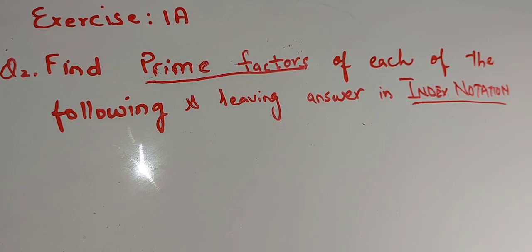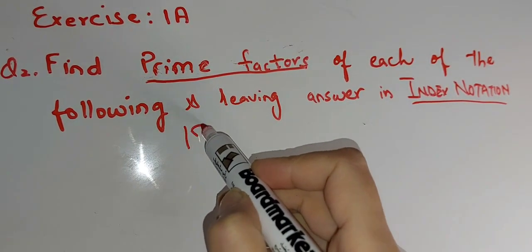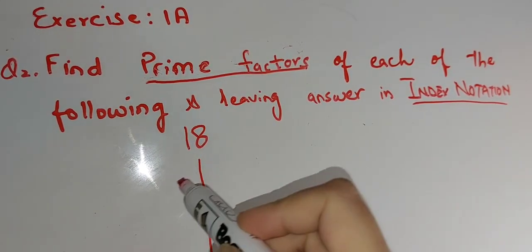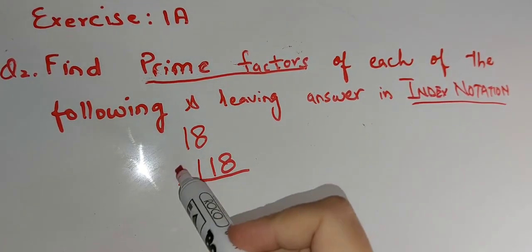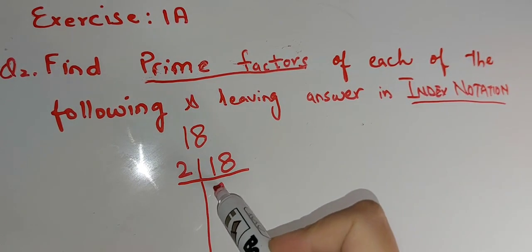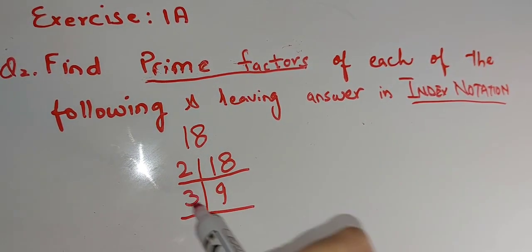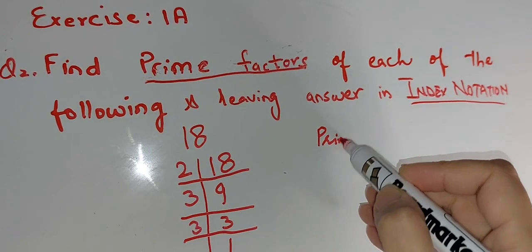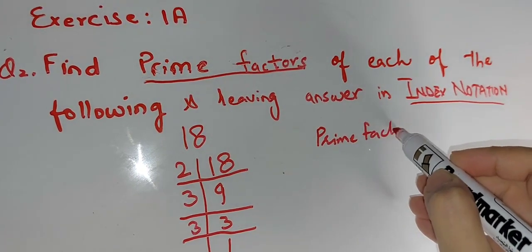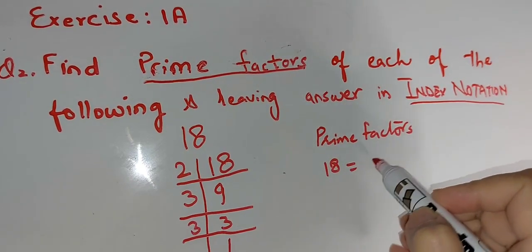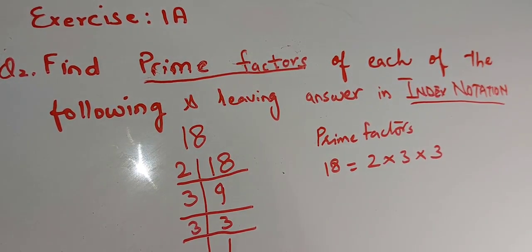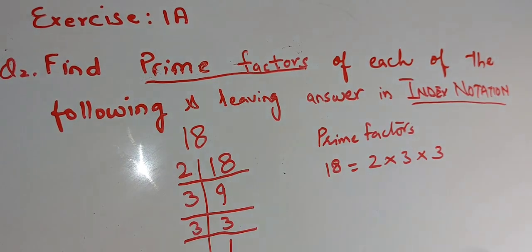For making prime factors, let's take an example of number 18. We have to make the factors of 18, and for making factors we form a grid. 18 is divisible by 2 — 2 nines are 18. Then 3 — 3 threes are 9, and then 3 ones are 3. So the prime factors of 18 become 2 multiply by 3 multiply by 3. This is how you make the prime factors of any number.